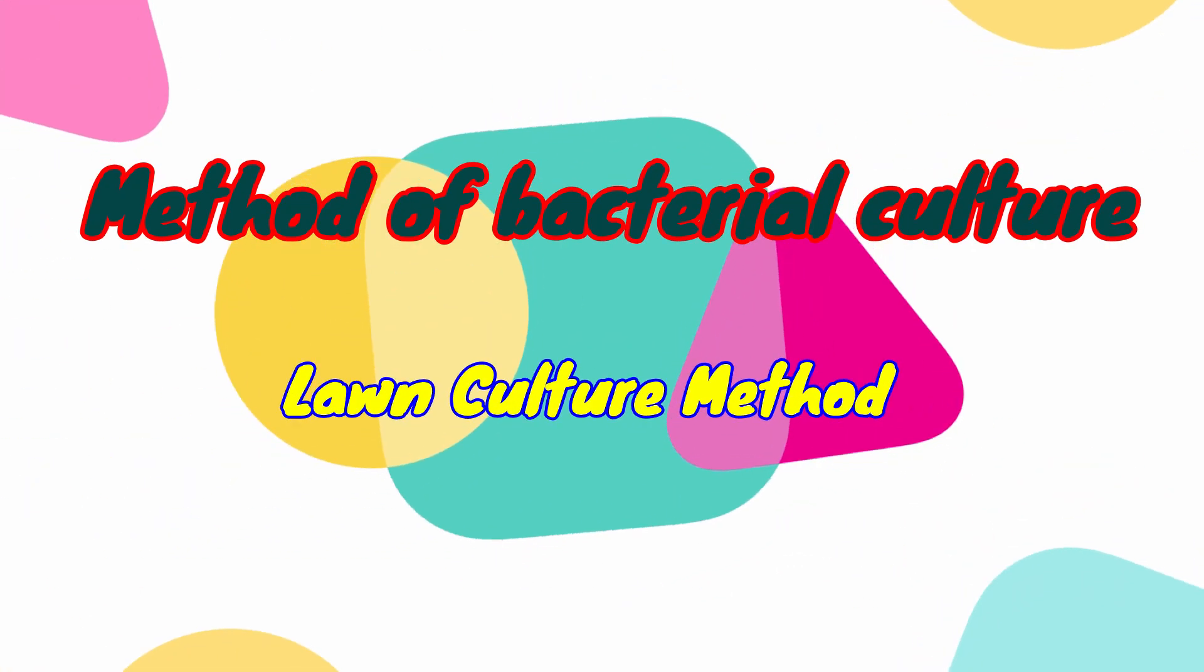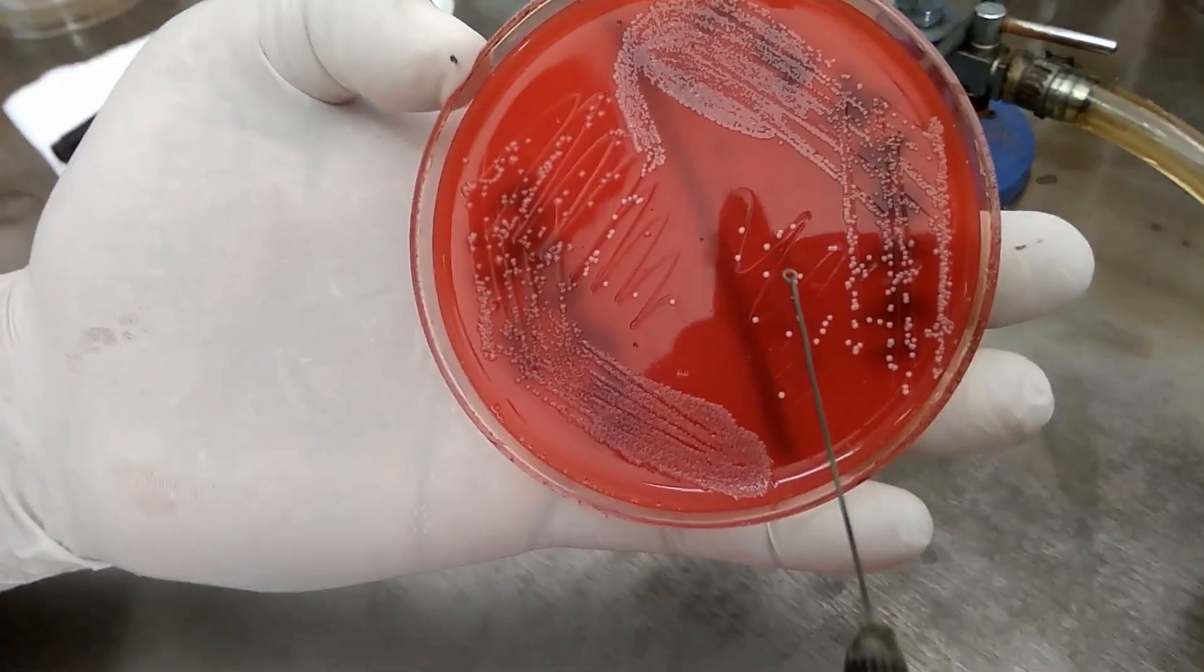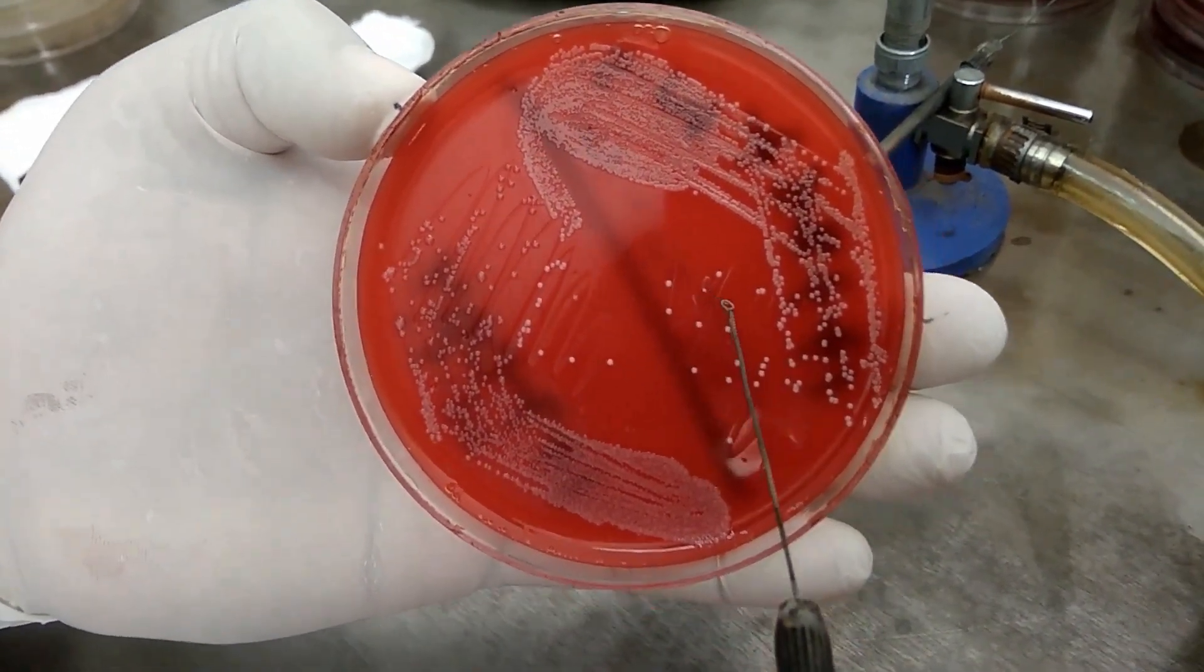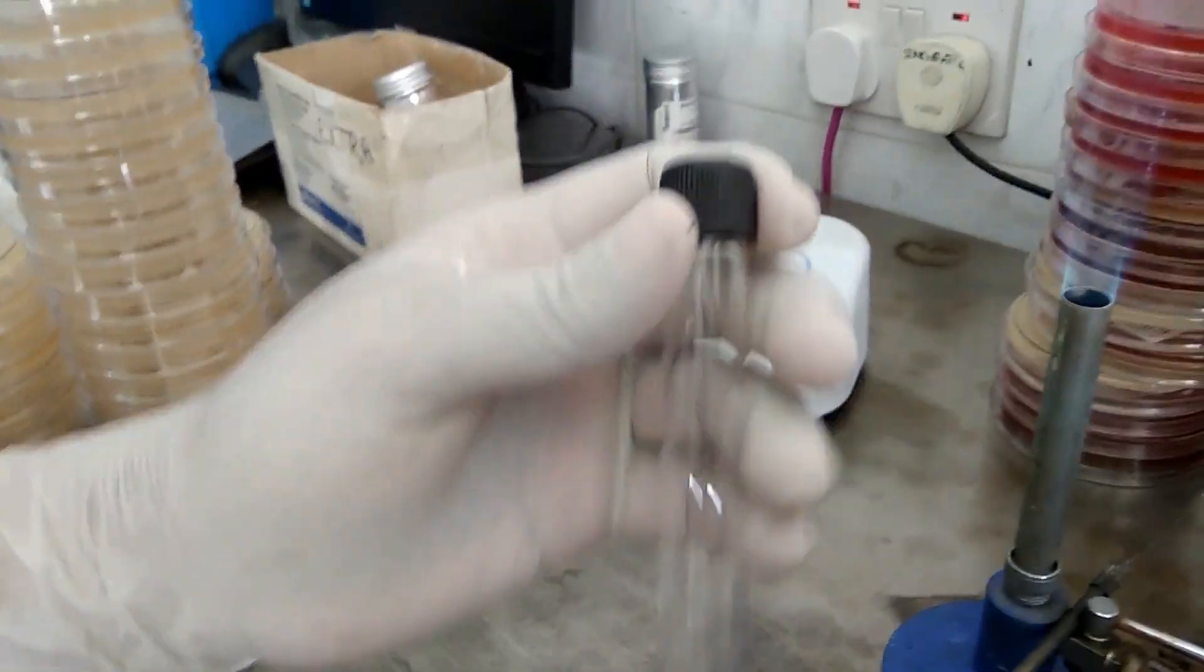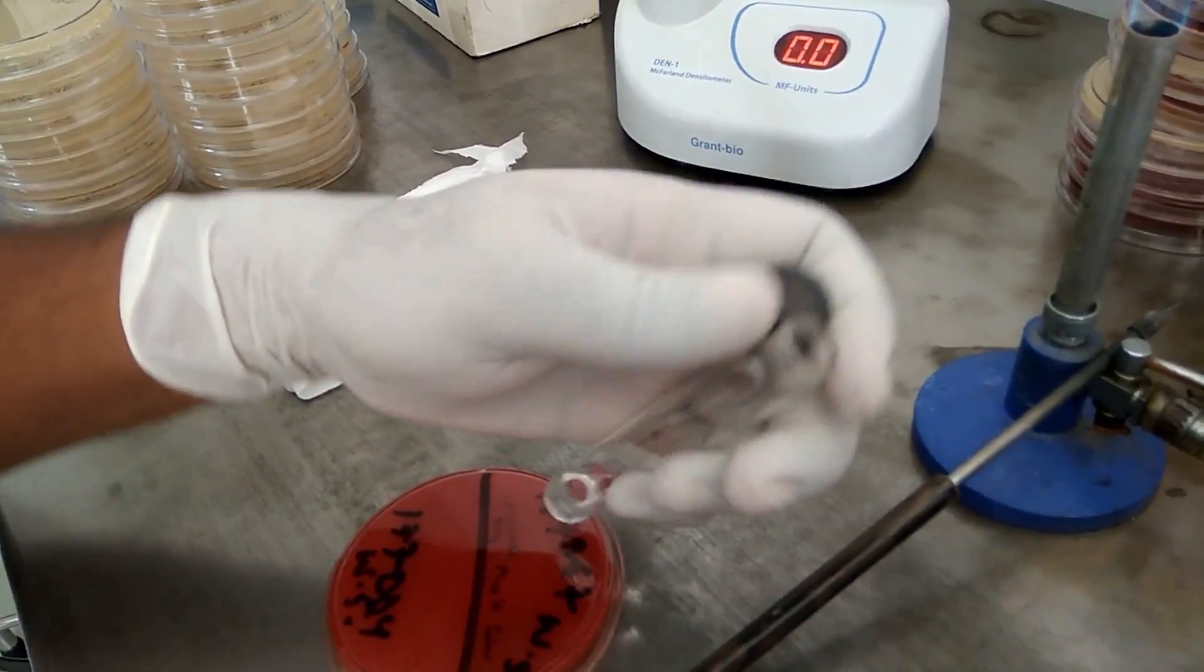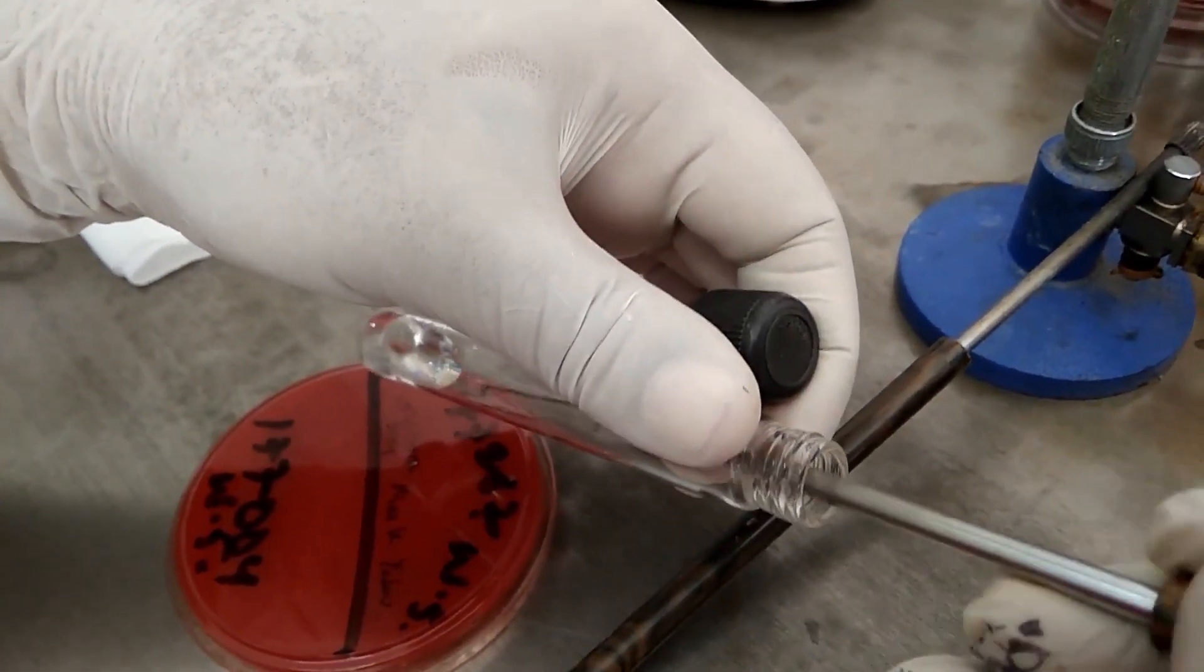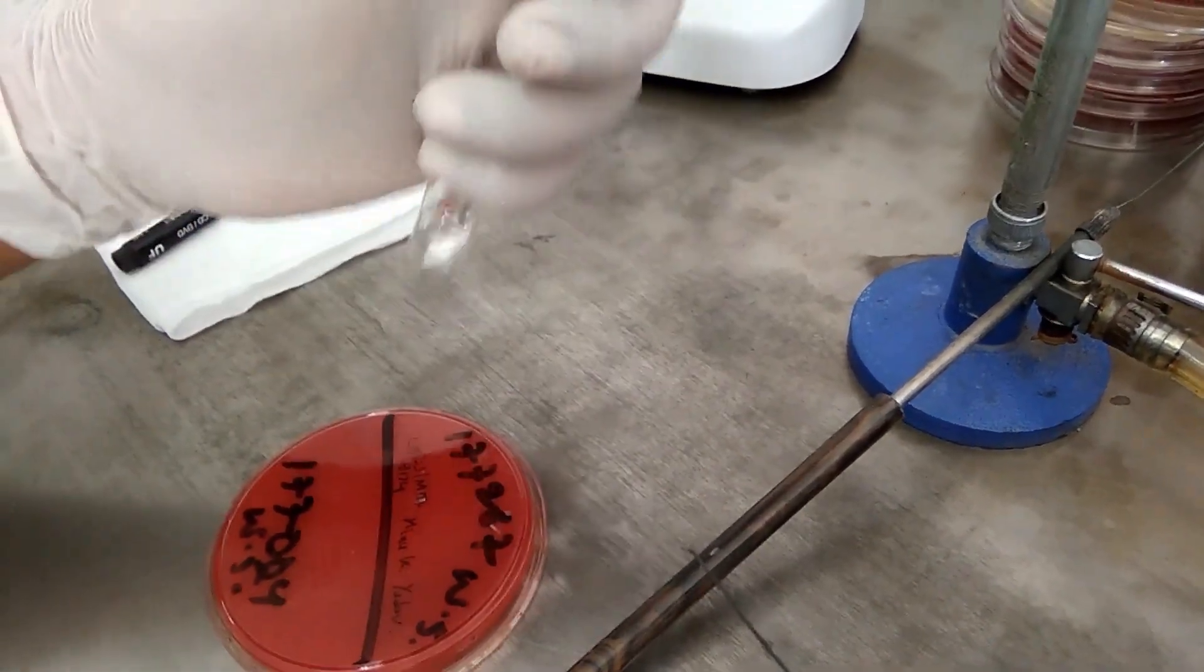Hi, let's learn about lawn culture. Methods of culture include streak culture, lawn culture, stroke culture, stab culture, pour plate culture, and liquid culture. Today we focus on lawn culture. This culture method is employed in antibiotic sensitivity testing, specifically disk diffusion method, and in bacterial phage typing.